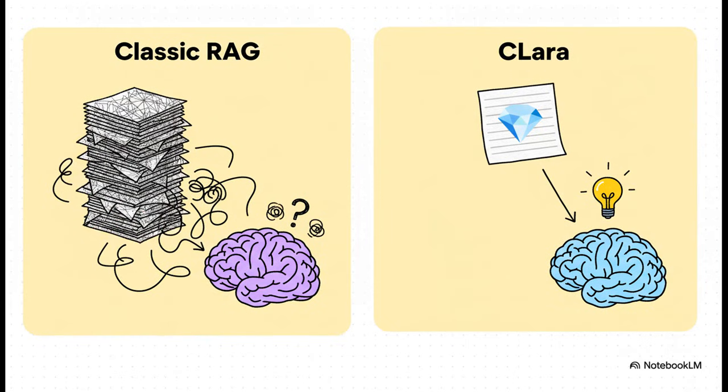And here's the side-by-side, plain and simple. Classic rag? It's retrieving those raw, noisy photocopies. CLARA, on the other hand, is retrieving clean, compressed summaries, the smart notes. And that shift from messy, lengthy text to pure, concentrated meaning is what makes this whole thing unbelievably efficient.